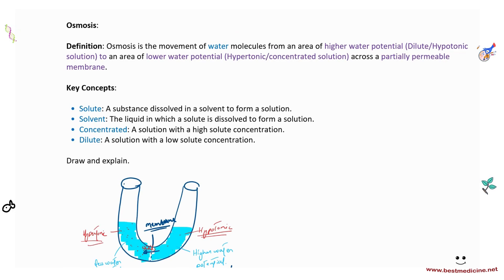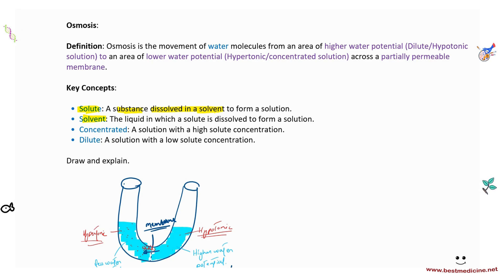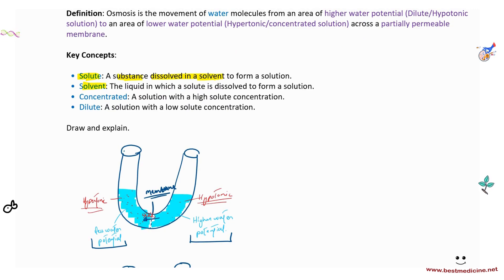Key vocabulary: a solute is the substance dissolved in a solvent — for example, these red particles dissolved in water. Solvent is the liquid in which the solid is dissolved — here, that's water. A concentrated solution has high solute concentration and is called hypertonic, with lower water potential. A dilute solution has low solute concentration and is called hypotonic, with higher water potential. Osmosis always occurs from a dilute to a concentrated solution, from higher to lower water potential.